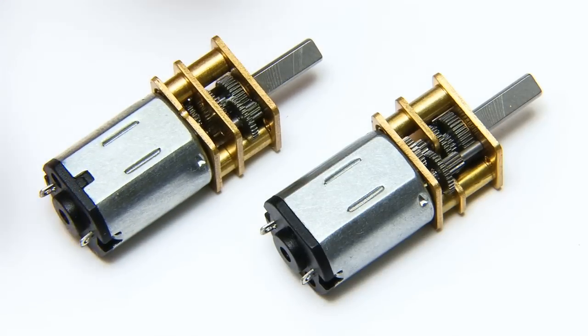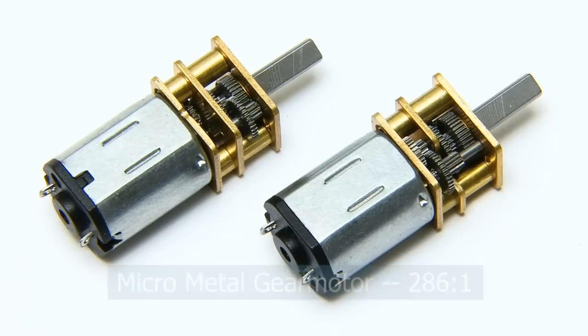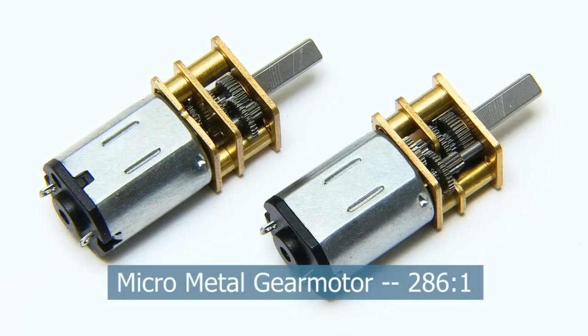Amazing little motors there as you can see. They've got some gearboxes on the front. You can buy these with all sorts of different gearing ratios. Here I've gone for 286 to 1, which means our robot will be quite slow moving, which will hopefully give us more control.